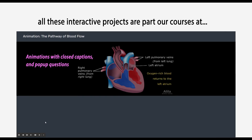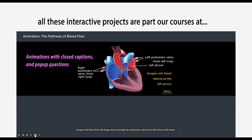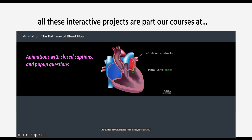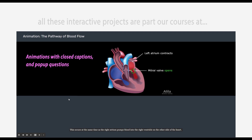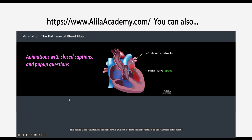Oxygen-rich blood from the lungs returns through the pulmonary veins to the left atrium of the heart. As the left atrium is filled with blood, it contracts. The mitral valve opens, and blood is pumped into the left ventricle. This occurs at the same time as the right atrium pumps blood into the right ventricle on the other side of the heart.